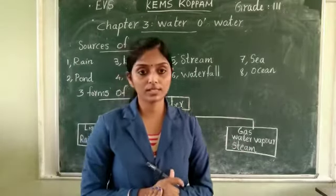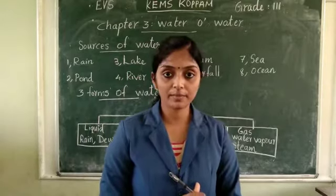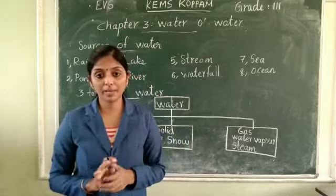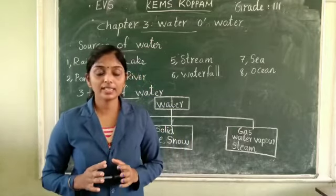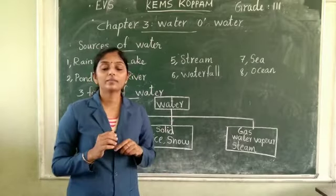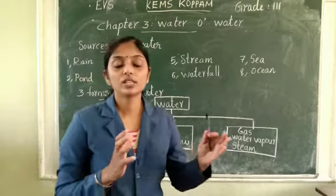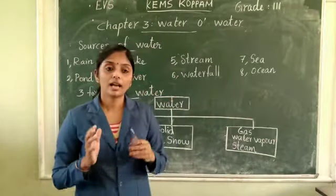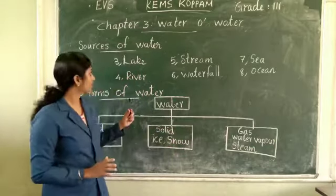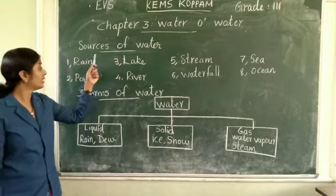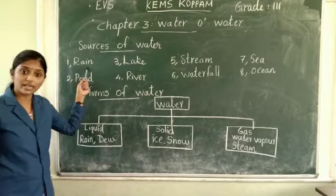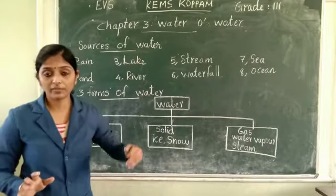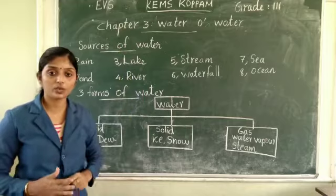There are so many sources of water. Do you know which is the main source of water? Rain is the main source of water. The rainwater is stored in other sources. And we will check which those sources are. The first and main source is rain. Rain means water drops falling from the sky.